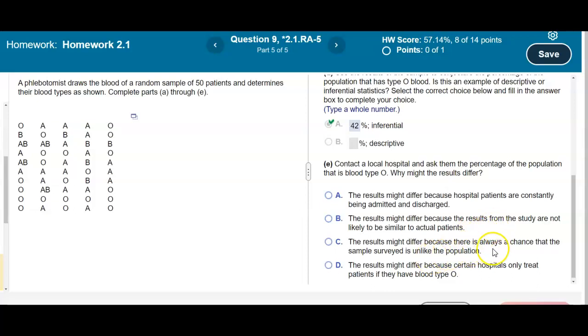The results might differ because there is always a chance that the sample surveyed is unlike the population. Or the results might differ because certain hospitals only treat patients if they have blood type O.